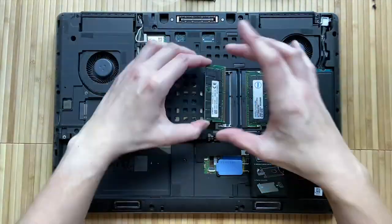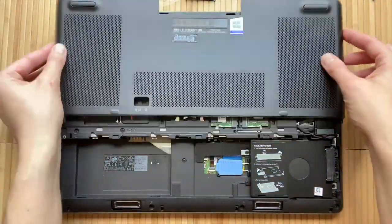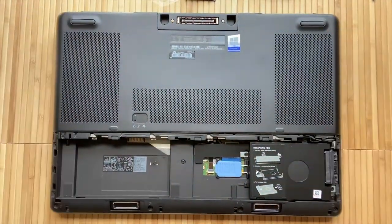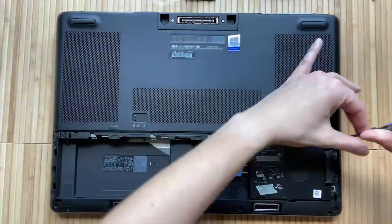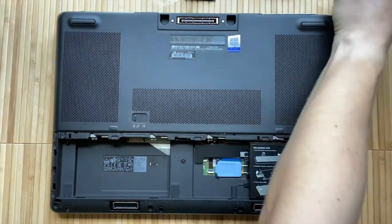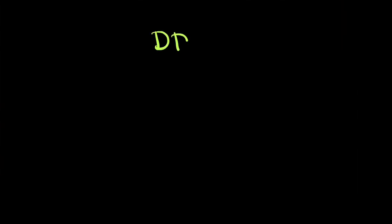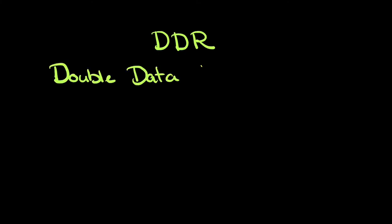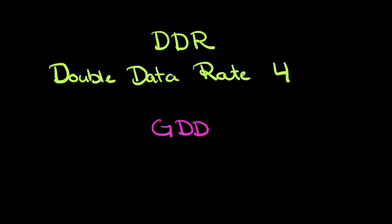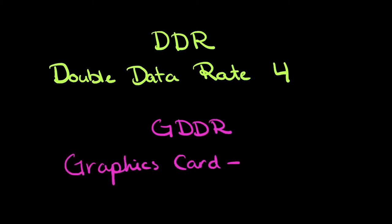The RAM that I'm upgrading here is DDR4 RAM, which stands for Double Data Rate 4, with 4 being the 4th generation of this specific type of RAM. DDR RAM is the most common type of RAM, but there's also GDDR for graphics DDR. GDDR, which is currently on the 6th generation, is usually on the video or graphics card itself.